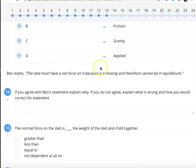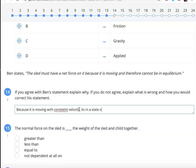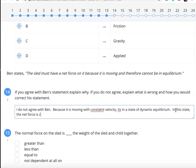And Ben says this must have a net force because it's moving. But that's not true. Because it is moving with constant velocity, it's in a state of dynamic equilibrium. So, two things I want to do here. First, I need to fix my spelling. I was typing too fast. So, I would also want to make an explicit statement. Do I agree with Ben? No. I do not agree with Ben. Because it is moving with constant velocity, it's in a state of dynamic equilibrium. In this state, the net force is zero. It doesn't need a net force to move.